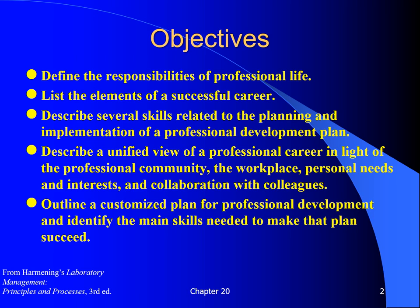Following successful completion of this chapter, the learner will be able to: define the responsibilities of professional life; list the elements of a successful career; describe several skills related to the planning and implementation of a professional development plan; describe a unified view of a professional career in light of the professional community, the workplace, personal needs and interests, and collaboration with colleagues; and outline a customized plan for professional development and identify the main skills needed to make that plan succeed.